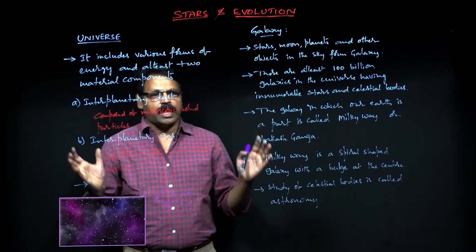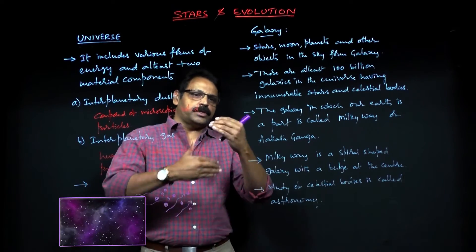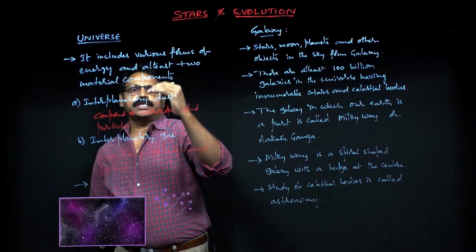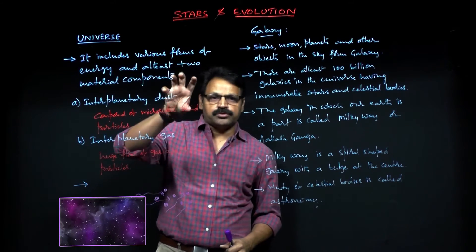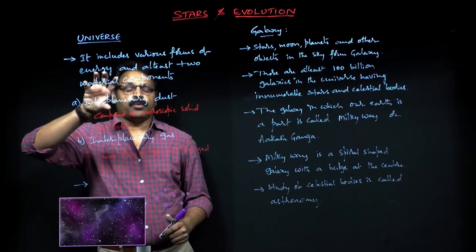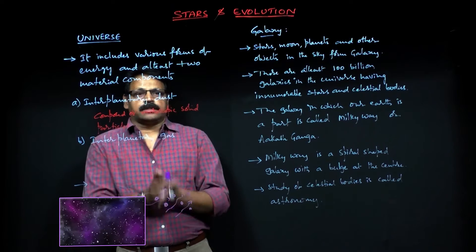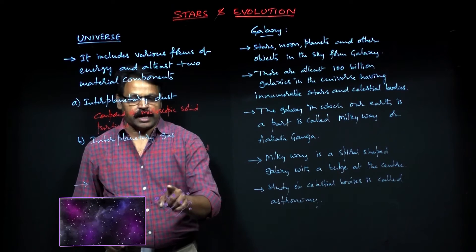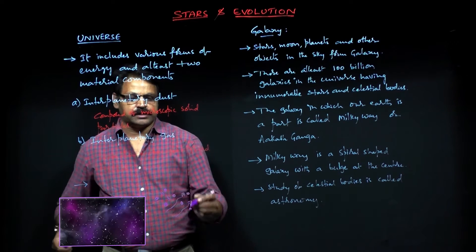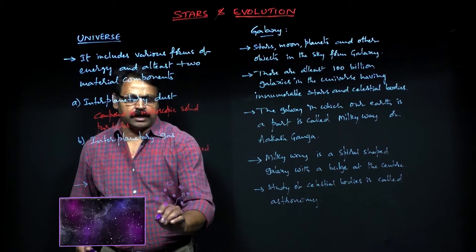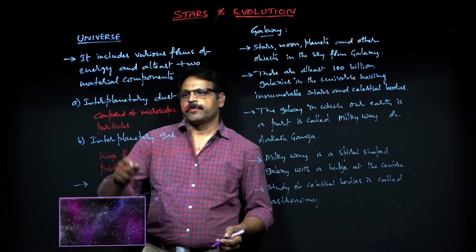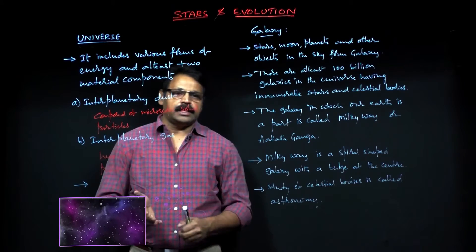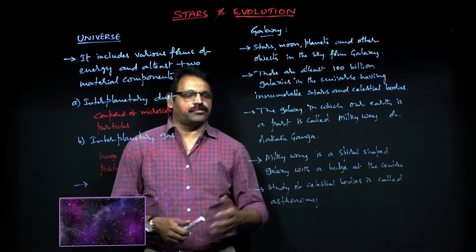From an astronomical aspect, the universe is the maximum — the broadest of everything. The universe has two materialistic components: energy plus two materialistic components. Matter is one of these components, and it is composed of microscopic solid particles, as drawn here. This is called interplanetary dust — in the universe you have planets, stars, moon, and so many other things.